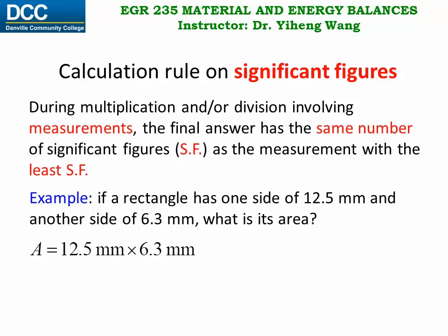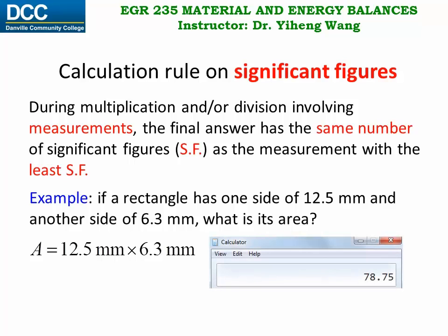If we use a calculator, this is what we get. 12.5 multiplied by 6.3 equals to 78.75. But the answer here should be rounded up to two digits, 79 squared millimeter, following this calculation rule. This is because we have two measurements, 12.5 has three significant figures, and 6.3 has two significant figures, which is less. Therefore, the answer here should also have two significant figures.